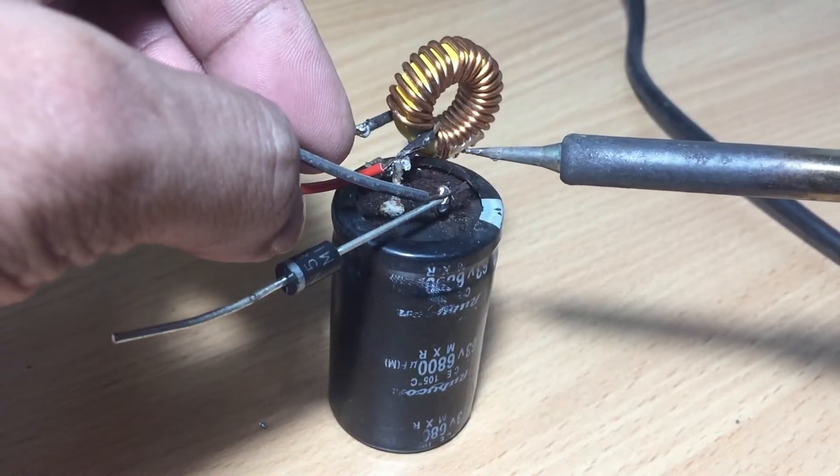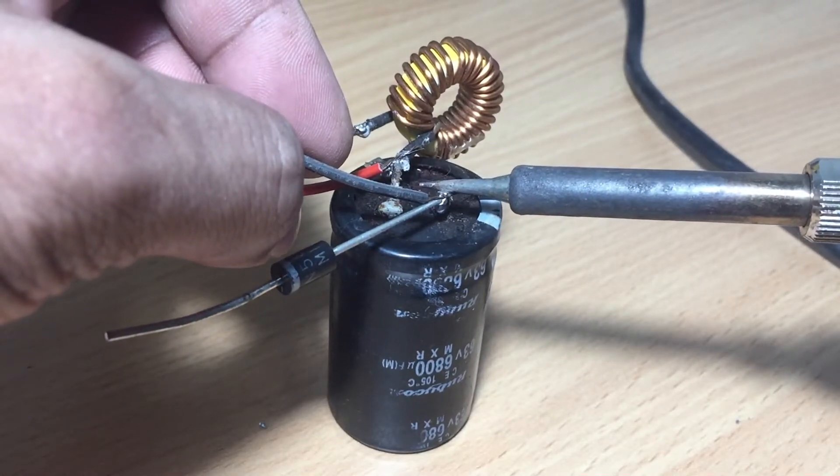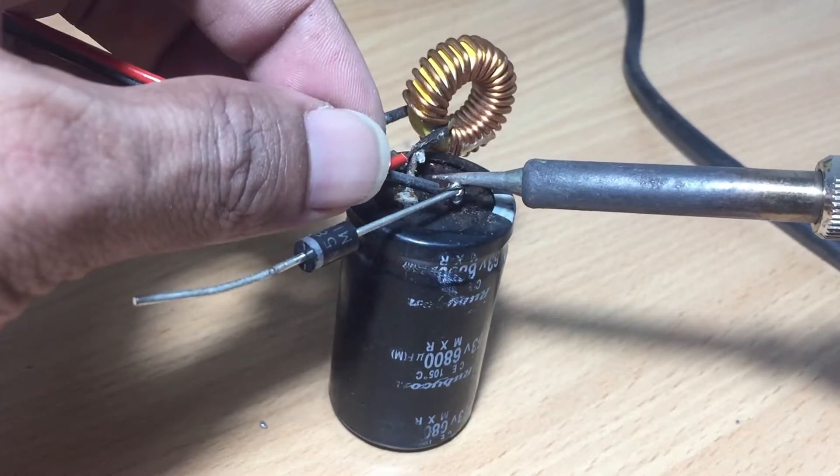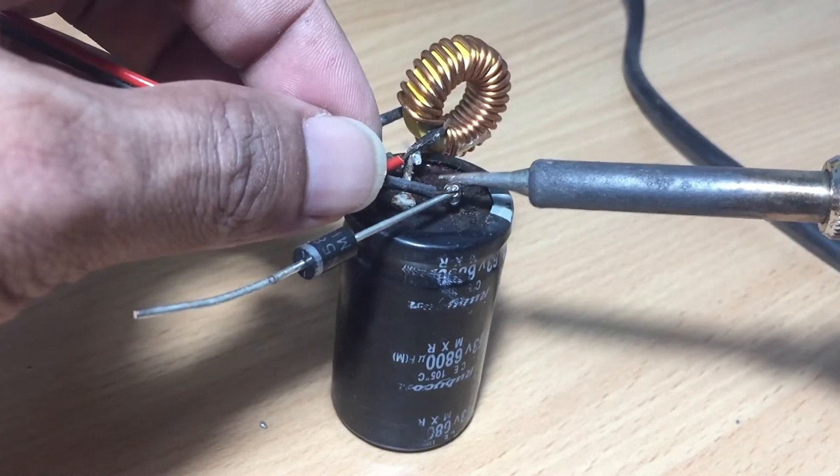Now take wire from the positive pin of the capacitor to the positive pin of your car audio device and give ground wire of the car audio device to the negative pin of the capacitor.